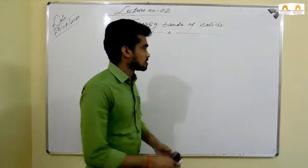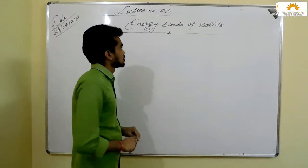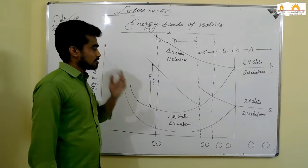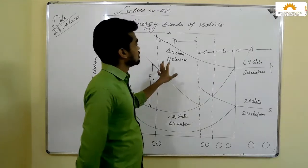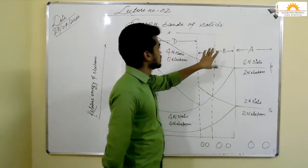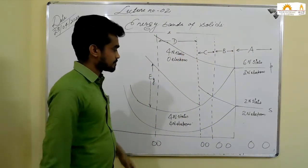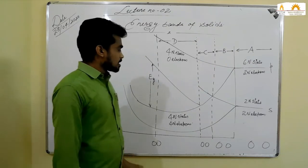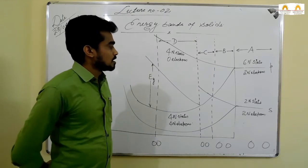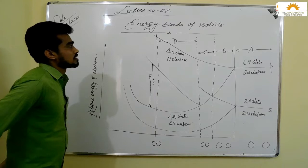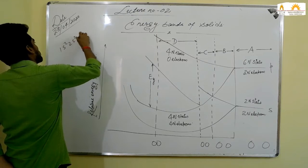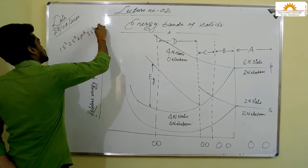Let us draw the diagram of energy bands of solids. In this diagram, we have divided the whole region into four parts: region A, region B, region C, and region D. We are talking about a crystal of silicon. The electronic configuration of silicon is 1s², 2s², 2p⁶, 3s², 3p². So we see that the last orbit has four electrons.